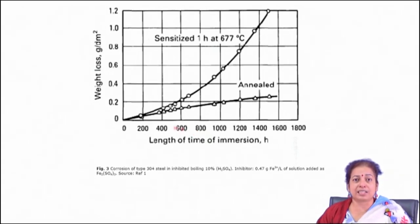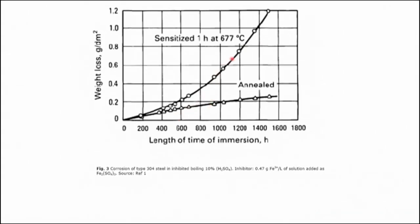As a result, when the steel after the welding operation is subjected to any corrosive environment, the corrosion rate of the heat affected zone is much faster than that of the rest of the regions. This steel is called sensitized steel, and the corrosion rate of sensitized steel is much higher than that of annealed steel. This is the major effect of intergranular corrosion.